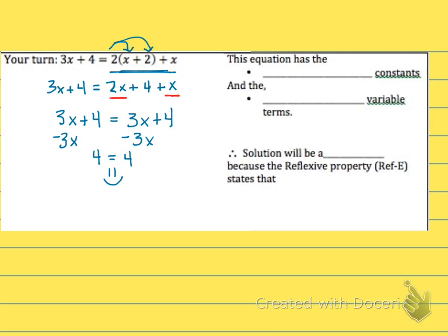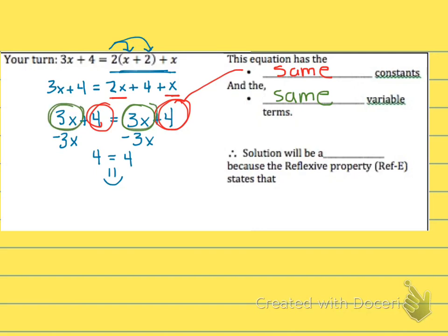This occurs when the equation has the same constants — we see that here with the plus 4 and plus 4 — and the same variable terms — 3x on both sides, though we may not see it right away. We get a demonstration of the reflexive property, and the solution is all real numbers, meaning any real value would work. In your textbook, this is called the identity, and having all real solutions is the same thing.